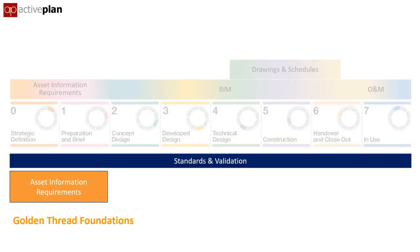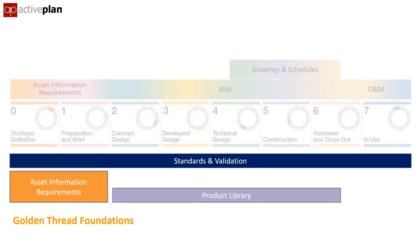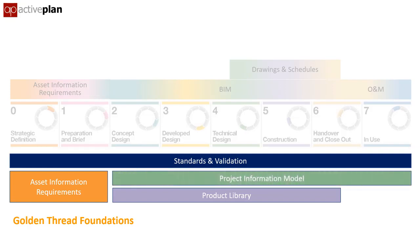A product library application can manage the product data used on a project, and is used to create the project information model, which is progressively updated. The O&M is an output from the PIM and can be generated at any stage, and the PIM transforms into an asset information model for long-term management and updating.